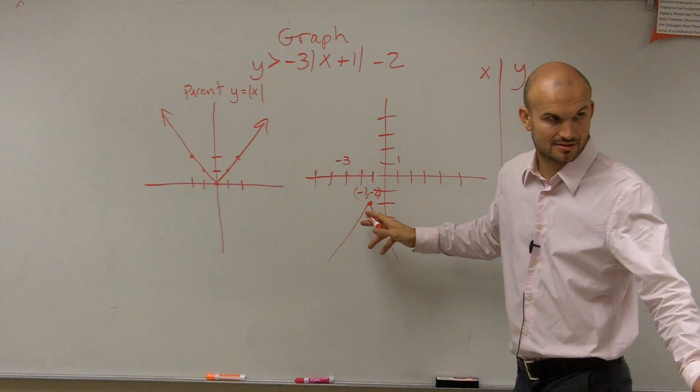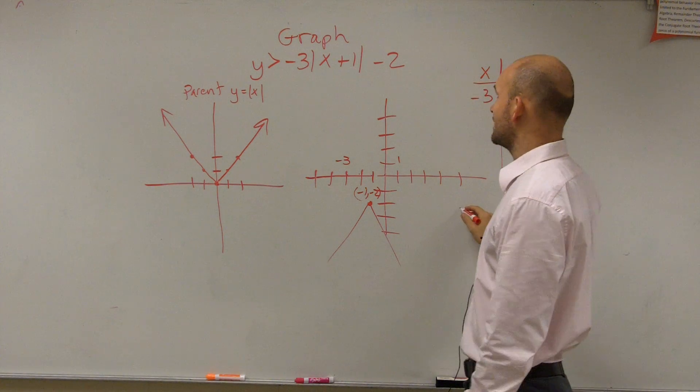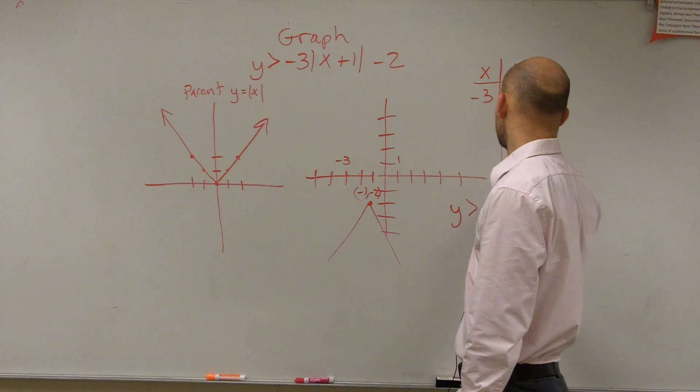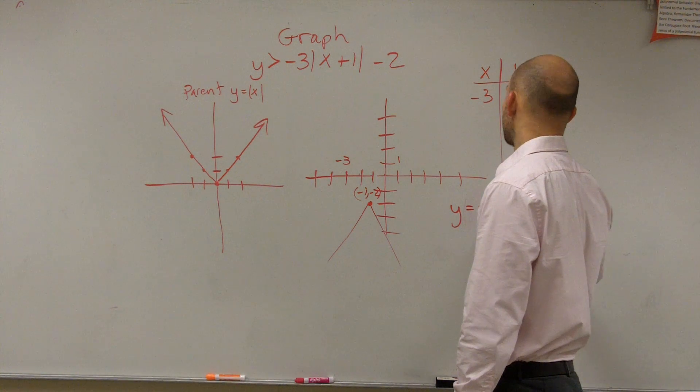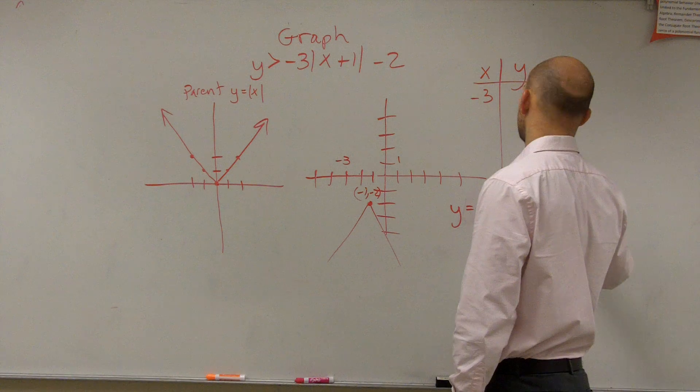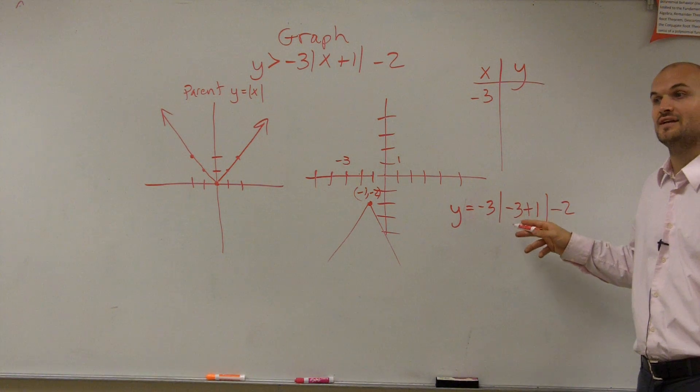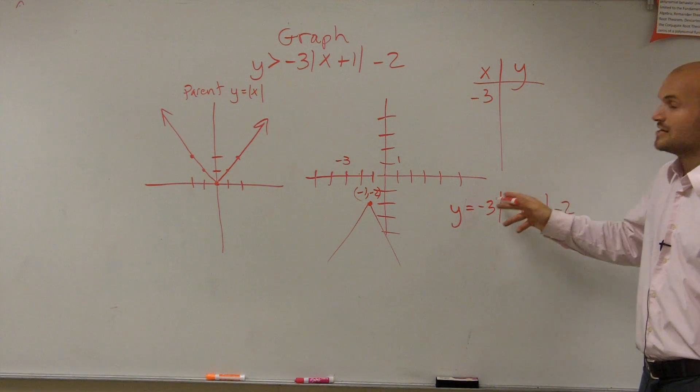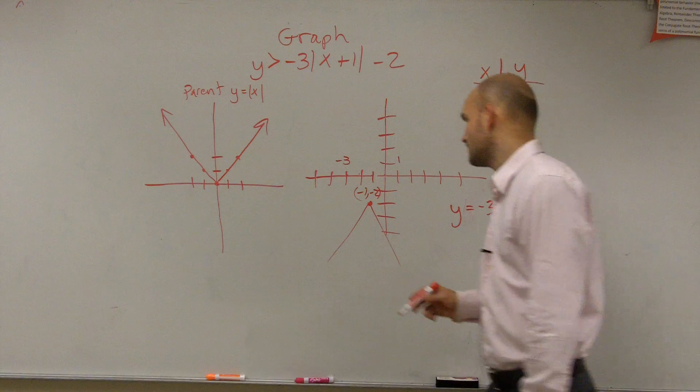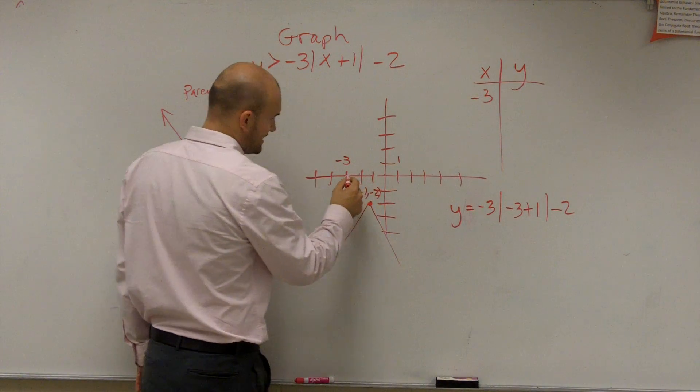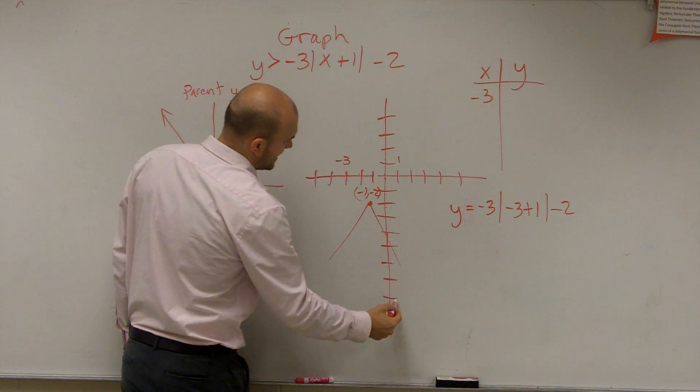Then let's take a look at negative 3. So if I plug in negative 3 into my function, y equals negative 3 times the absolute value of negative 3 plus 1, minus 2. Negative 3 plus 1 is negative 2. Absolute value of negative 2 is positive 2. 2 times negative 3 is negative 6. Negative 6 minus 2 is negative 8. So at negative 3, I need to go down to 1, 2, 3, 4, 5, 6, 7, 8.